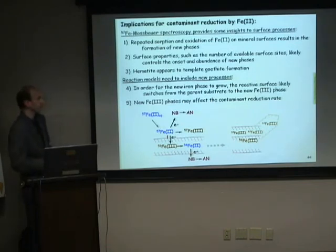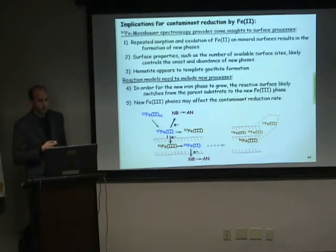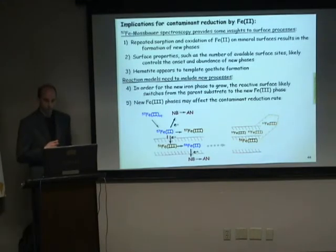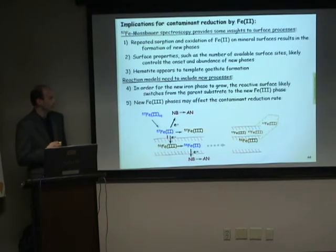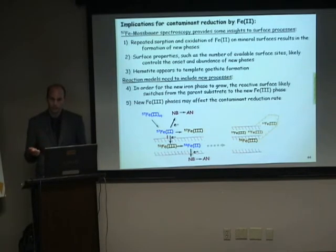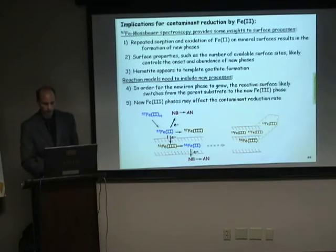To summarize the implications: our iron Mössbauer spectroscopy method shows that repeated sorption and oxidation of Fe2+ can result in new iron phases forming, and a surface property such as the number of available surface sites likely governs the onset and abundance of these phases. Hematite as well as some aluminum oxides may template and direct goethite formation. We need to account for the formation of these new iron phases and the transformation from one surface to another for the reactive surface, and to understand how different Fe3+ phases impact contaminant reduction rates. Different orders of magnitude for contaminant reduction rates are seen with different iron minerals, so the kind of iron oxides available in subsurface environments is certainly important.